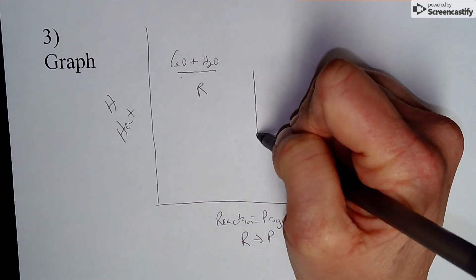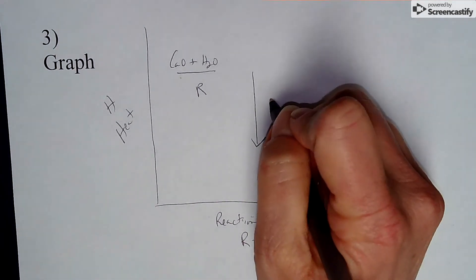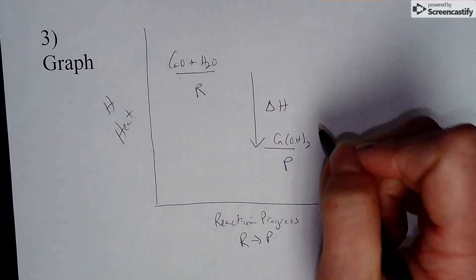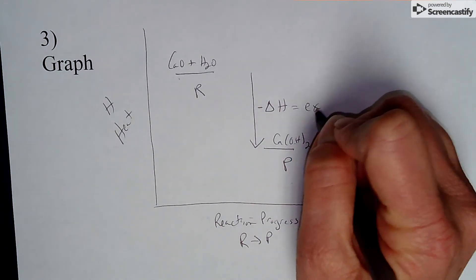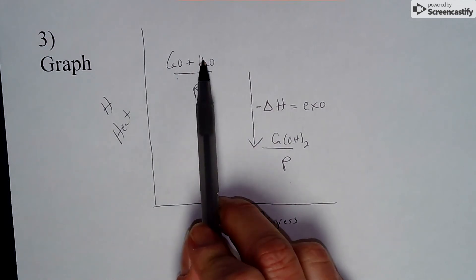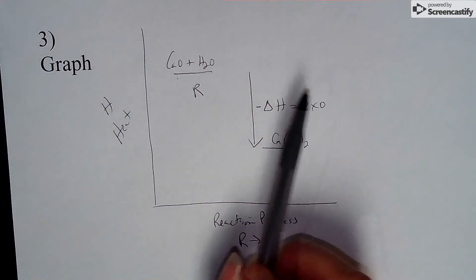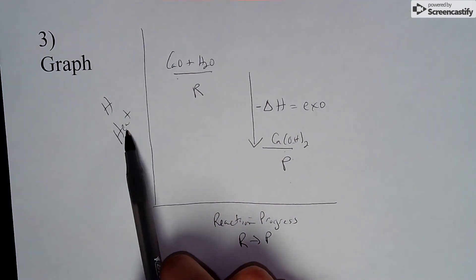The difference between the reactant and the product is something called your delta H. In this case, my delta H is going to be a negative quantity because this is an exothermic process. What it means is when I take the reactants and make the product, there is a release of energy. That means that the product is at a lower energy state than the reactant.